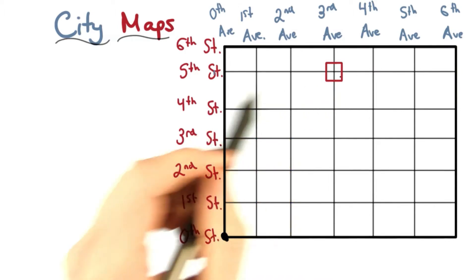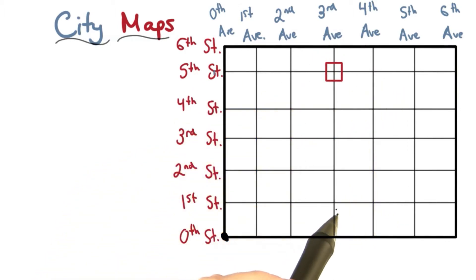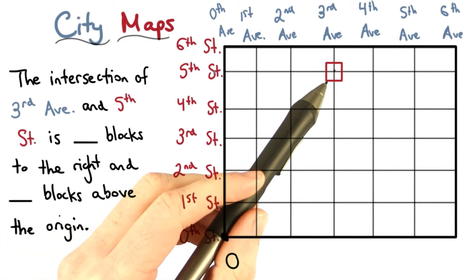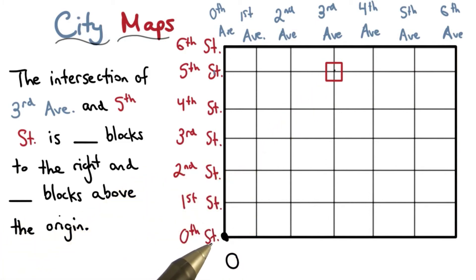Now, I want to think about this intersection at 5th Street and 3rd Avenue in relationship to the origin. How would you complete the following statement? How many blocks is this intersection to the right of the origin and above the origin? Fill in the numbers here.